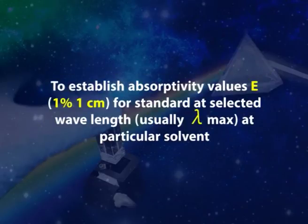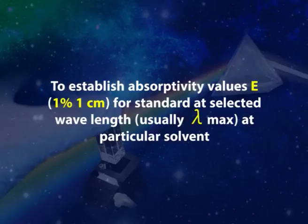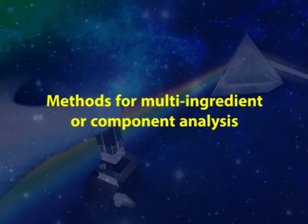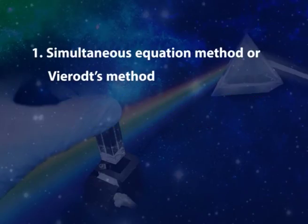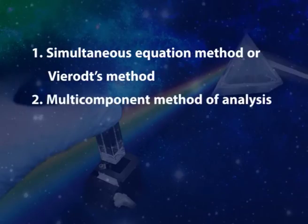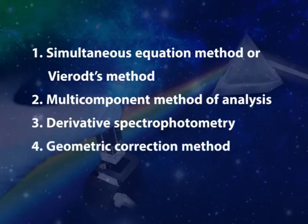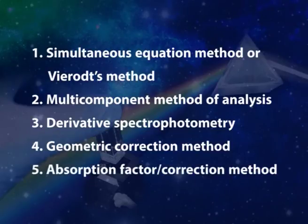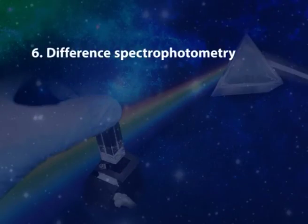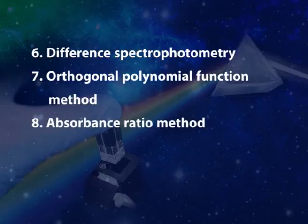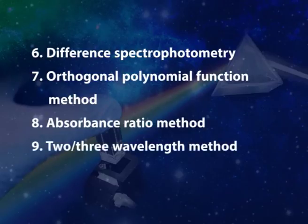Method for multi-ingredient compound analysis includes: simultaneous equation method or Vierordt's method; multi-component method of analysis; derivative spectrophotometry; geometric correction method; absorption factor or correction method; difference spectrophotometry; orthogonal polynomial function method; absorbance ratio method; and two or three wavelength method.